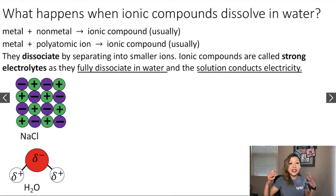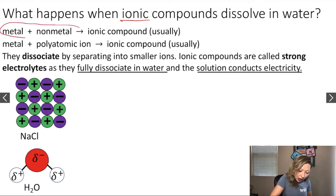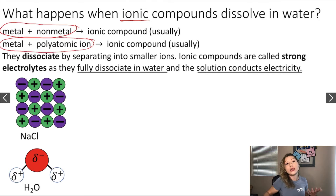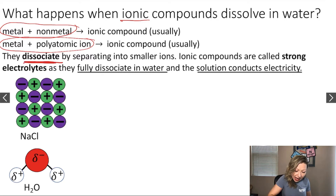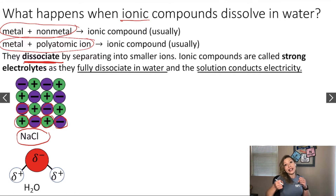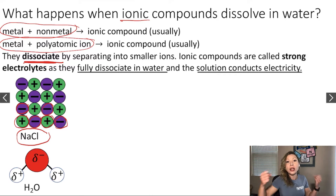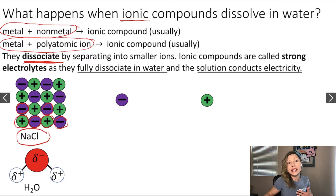So what happens when stuff dissolves in water? Let's start with ionic compounds. What is an ionic compound? When you have a metal with a non-metal or a metal with a polyatomic ion, it's going to form an ionic compound usually. These ionic compounds dissociate by separating into smaller ions. Let's take a look at sodium chloride — we have the green sodium ions and the chloride ions in purple, and they form a crystal lattice with a very nice array structure. When they dissolve in water, they fall apart into Na⁺ and Cl⁻ ions.